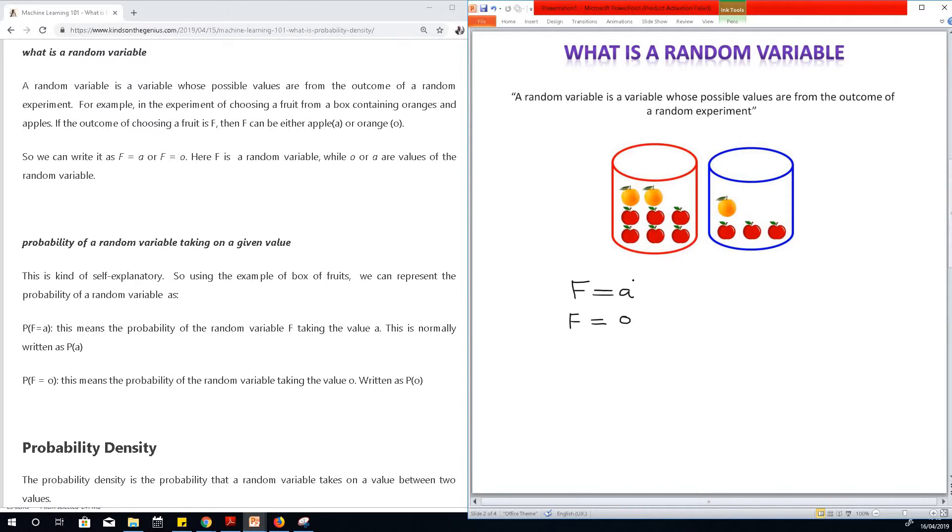Just to summarize, a random variable can take possible values from the outcome of a random experiment. And in this particular experiment, we select an item from the red box and the two possible values could only be apple or orange. So in this case, the values of f, which is the random variable, could be either a or o.